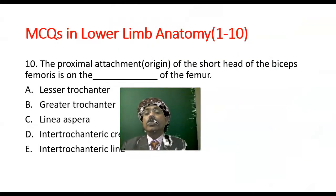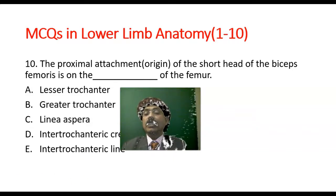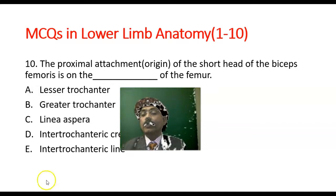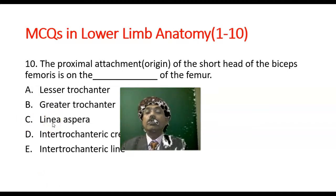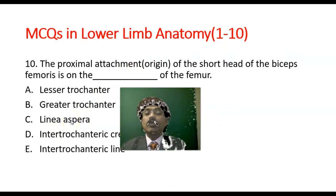Question number 10: The proximal attachment — that is, the origin — of the short head of the biceps femoris is on the lateral linea aspera, and also from the upper part of the lateral supracondylar ridge. So that is the proximal attachment of the short head of the biceps femoris muscle.